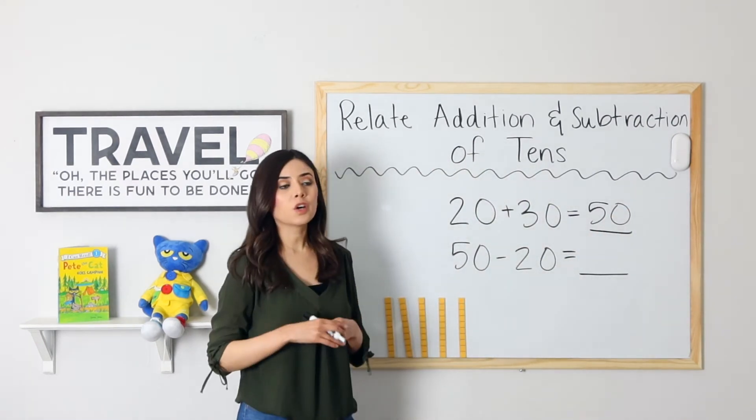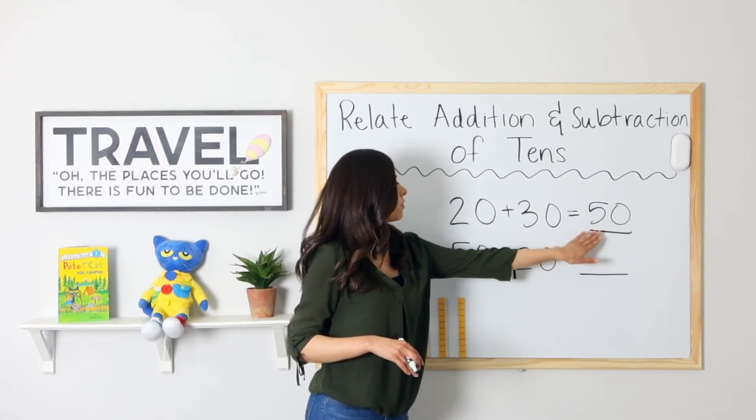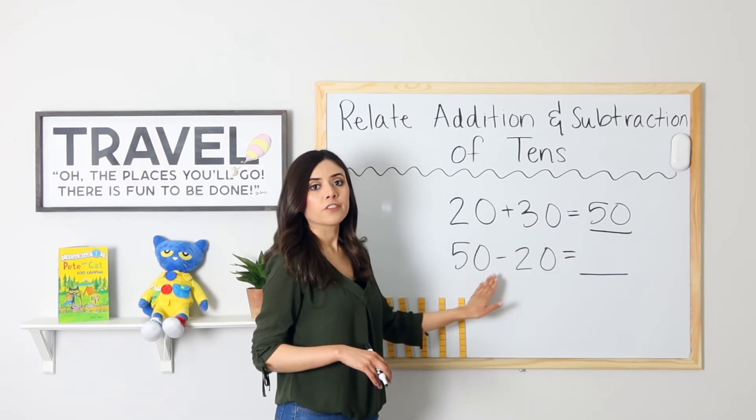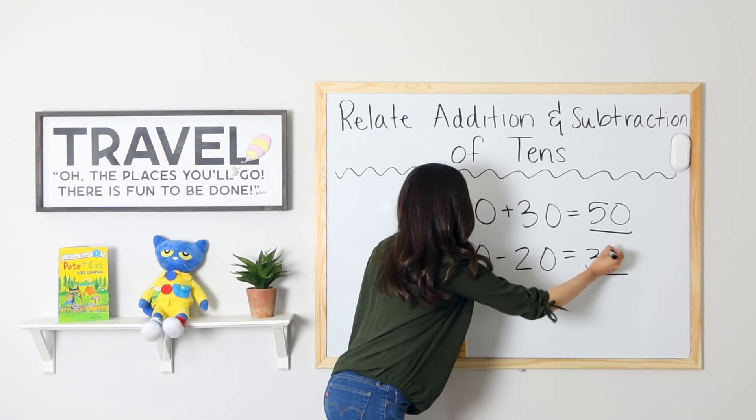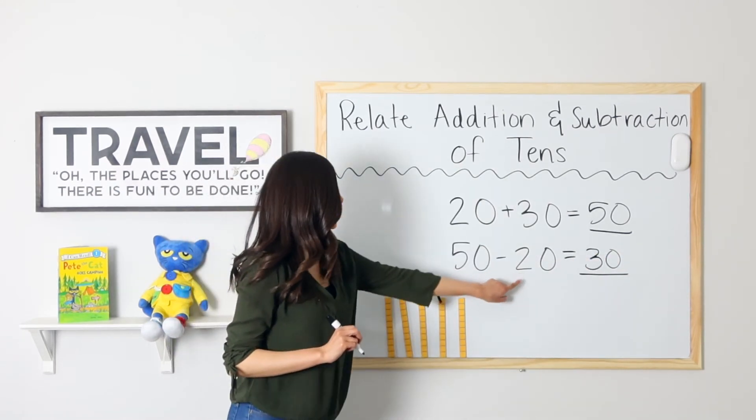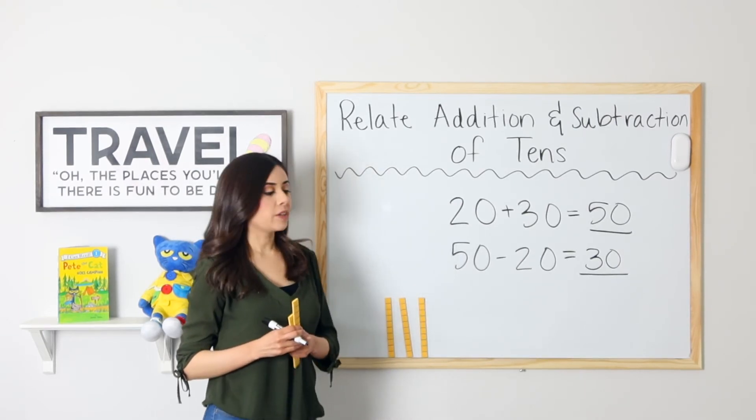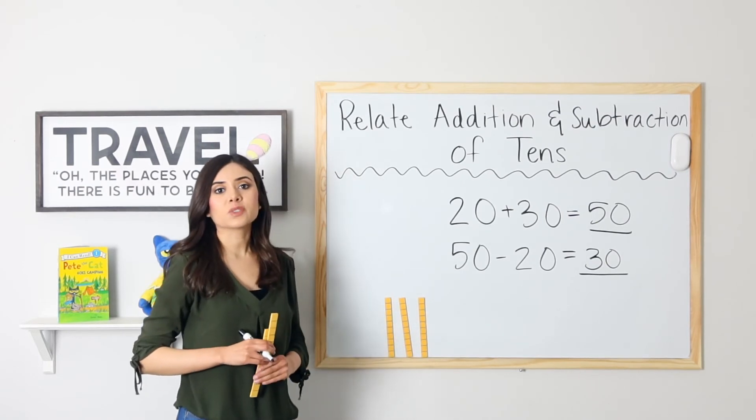So if 20 plus 30 equals 50, then that means 50 minus 20 equals 30. 50 minus 20 equals 30. I have my 50 units up here. If I take away 20, do I end up with 30? 10, 20, 30. Yes, I do. Good job.